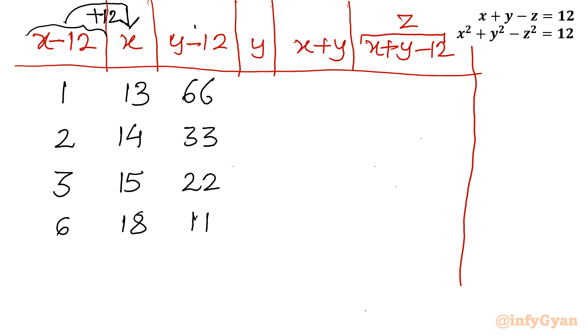Now come to y minus 12 to y column. How it will be? I will add again plus 12 to y minus 12 column. So 66 plus 12 is 78, 33 plus 12 is 45, 22 plus 12 is 34, and 11 plus 12 is 23.